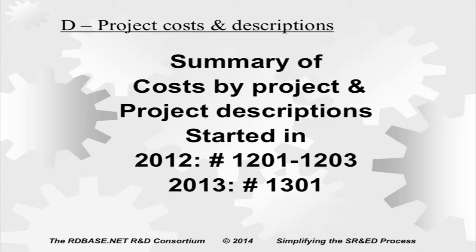One of the first things I like to do if the client doesn't have their own numbering system is recommend a numbering system for SR&ED. The first project started in the 2012 taxation year would be 1201, 1202, 1203, etc. The first project started in 2013 would be 1301 and so forth, because one of the questions the form now asks is whether this is a brand new project or a continuation of a prior year project.